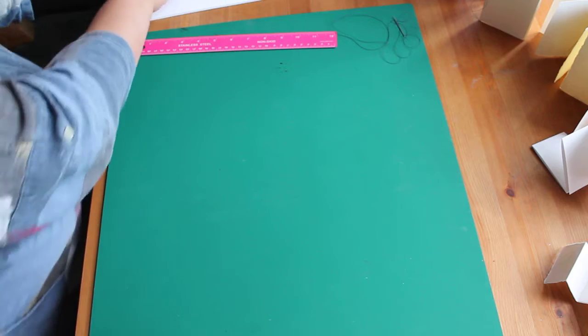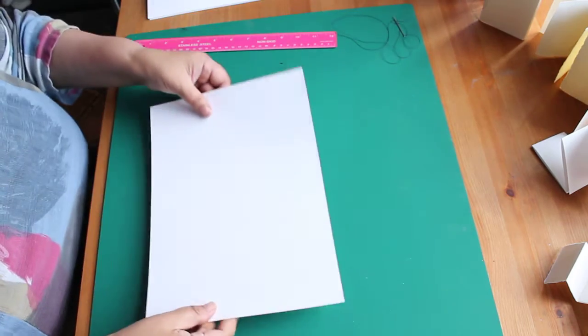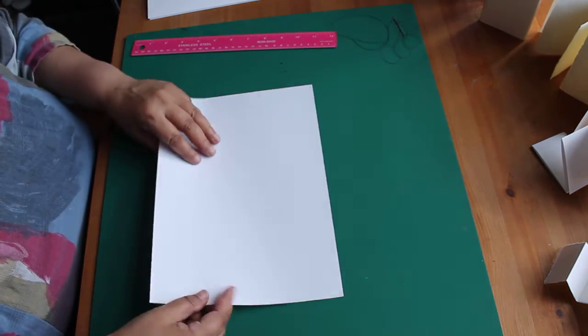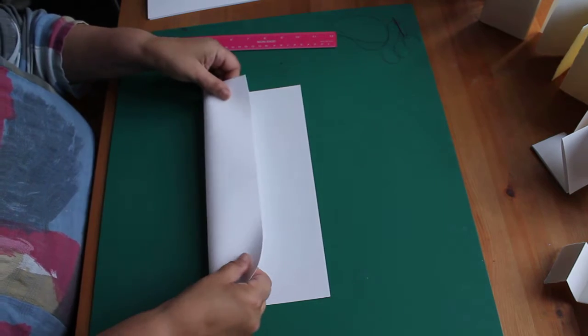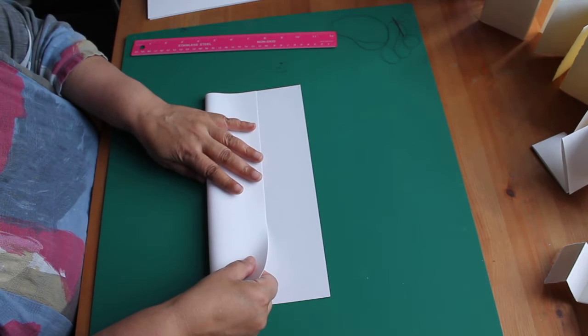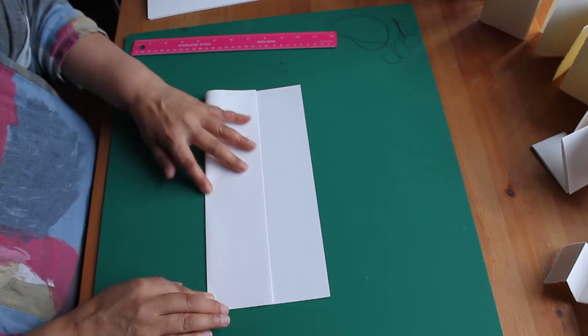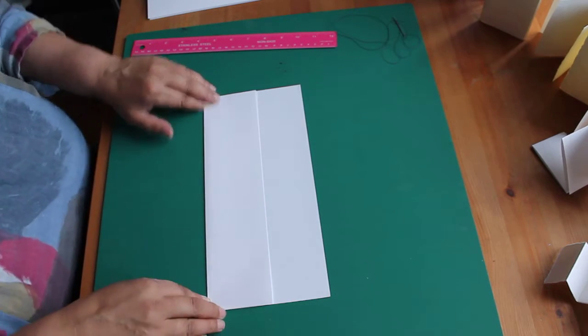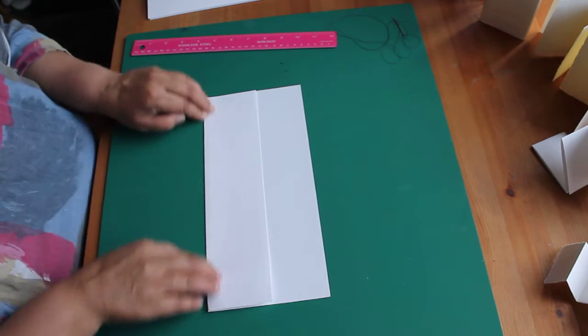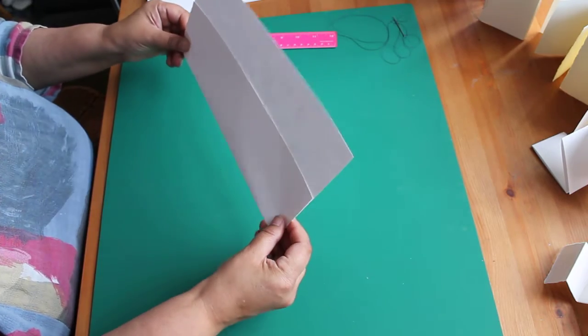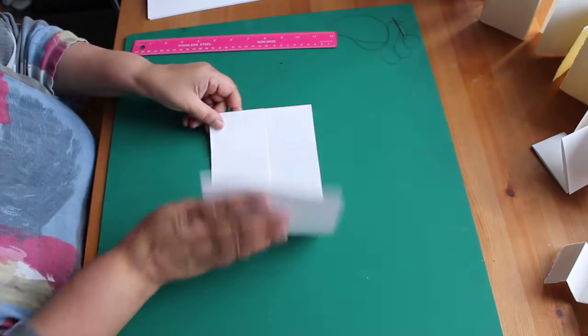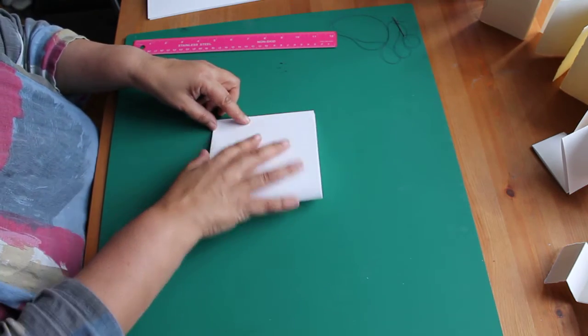You can also make a pocketbook. So if you take an A4 sheet of paper, fold about a third of the way up. So you have that like that. Then fold that in half.